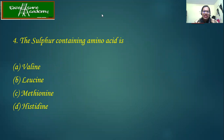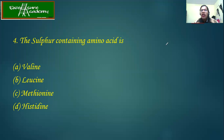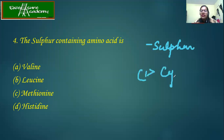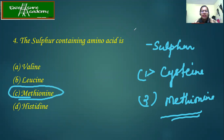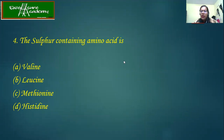The sulfur-containing amino acids. If you remember the classification of all these amino acids — how they have been arranged based on polarity, charges, and side groups — the sulfur-containing amino acids are only two: cysteine and methionine. Looking at the options — valine, leucine, methionine, and histidine — the answer is methionine.